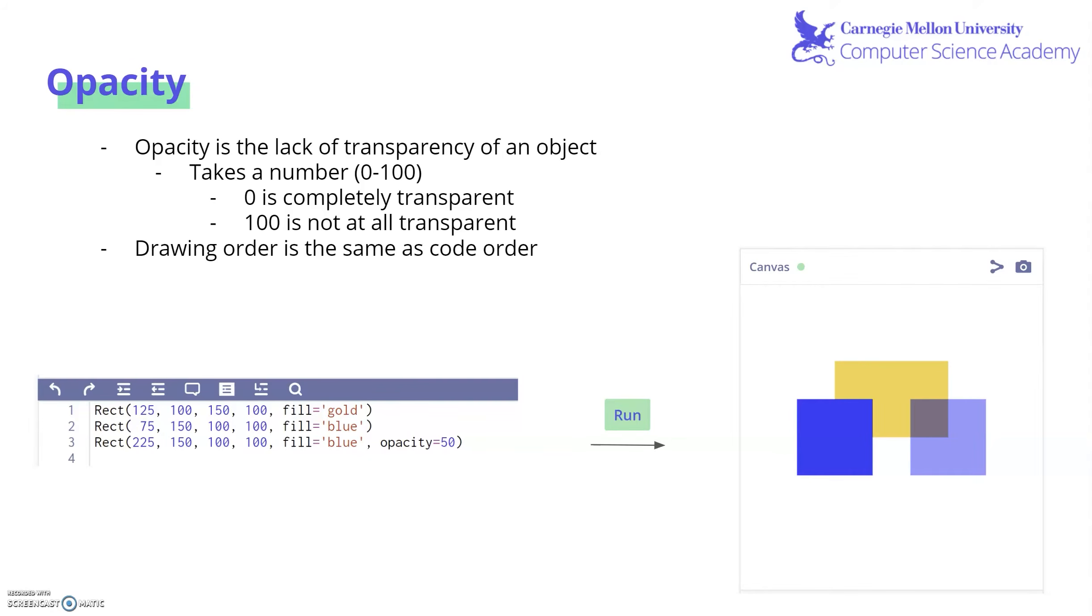Another parameter we can modify for shapes is opacity. Opacity is the lack of transparency of an object, and it ranges from 0 to 100, where 0 opacity means completely transparent and 100 is not at all transparent. It's also important to know that when you're drawing, the drawing order is the same as the code order. Let's take a look at these three rectangles, the first of which is our gold rectangle, where you see it here all the way in the back because it was drawn first. Then we have a second rectangle, which is blue. Both of these have no modified opacity. Finally, we have this rectangle with an opacity of 50, so it's halfway transparent, and you can see part of the gold rectangle behind it.